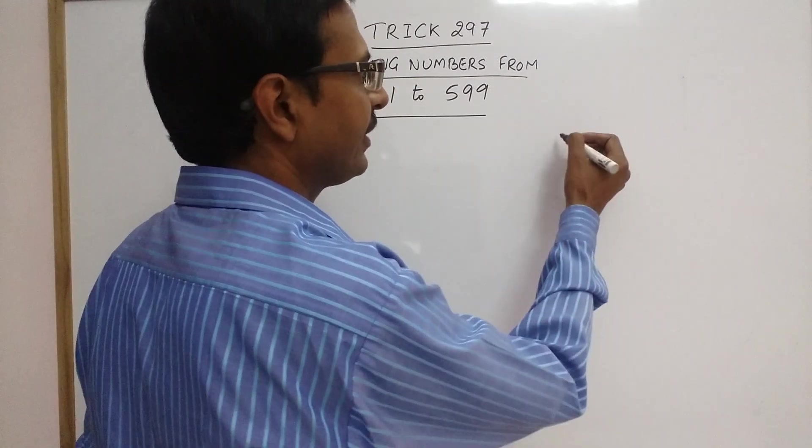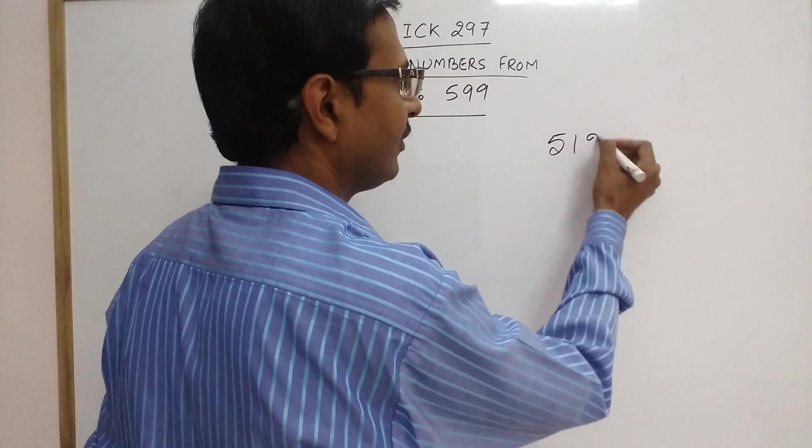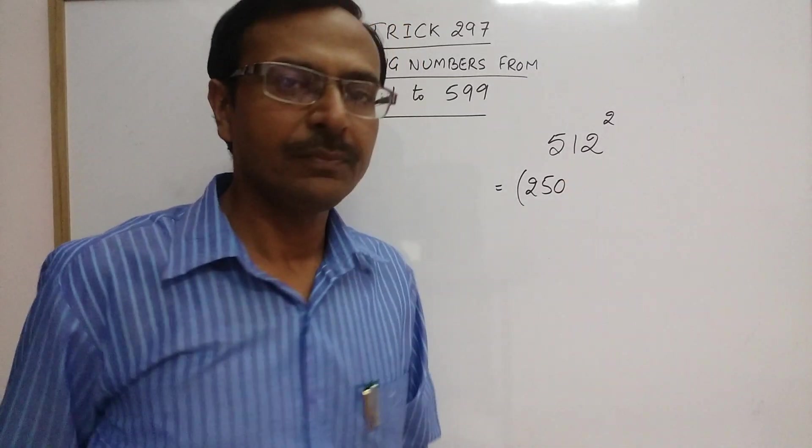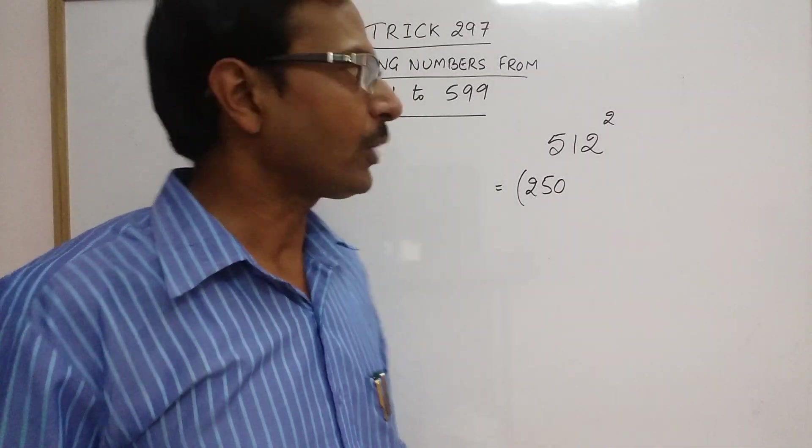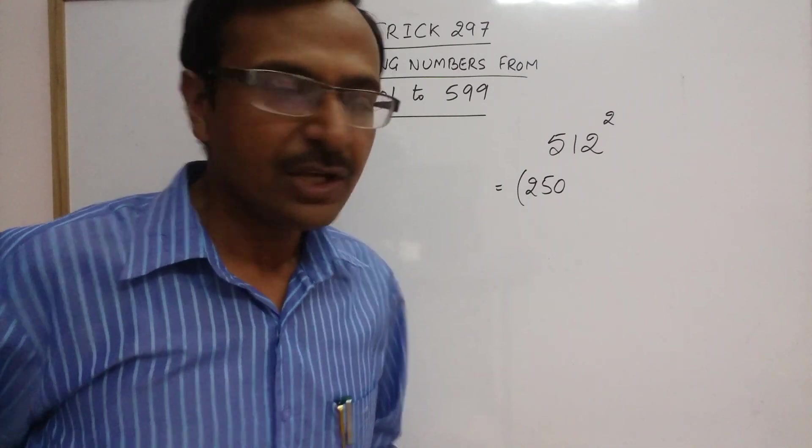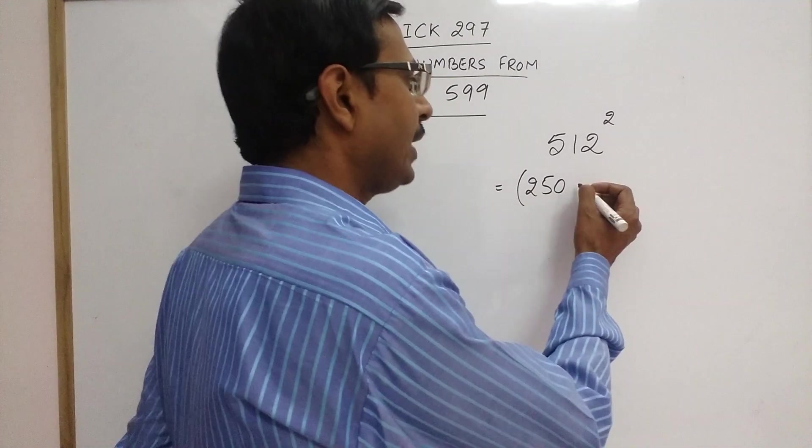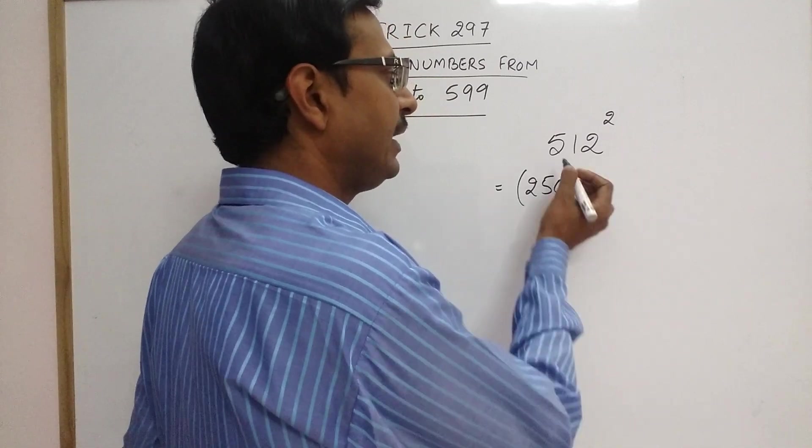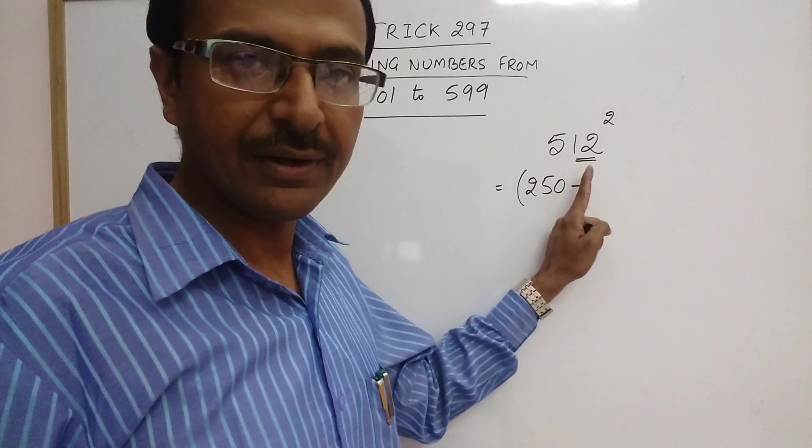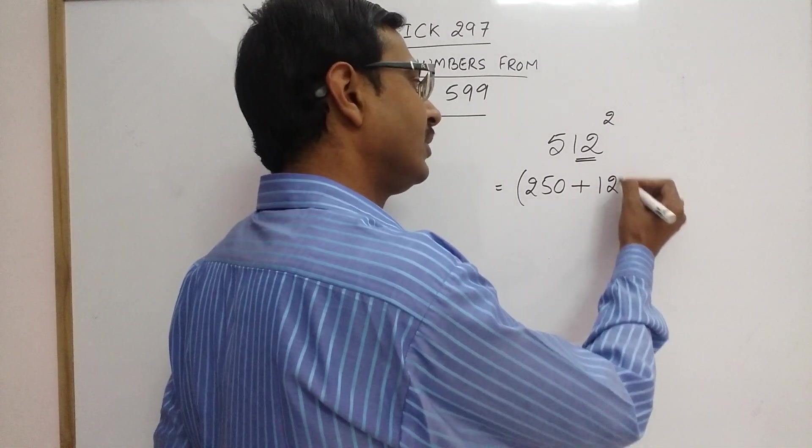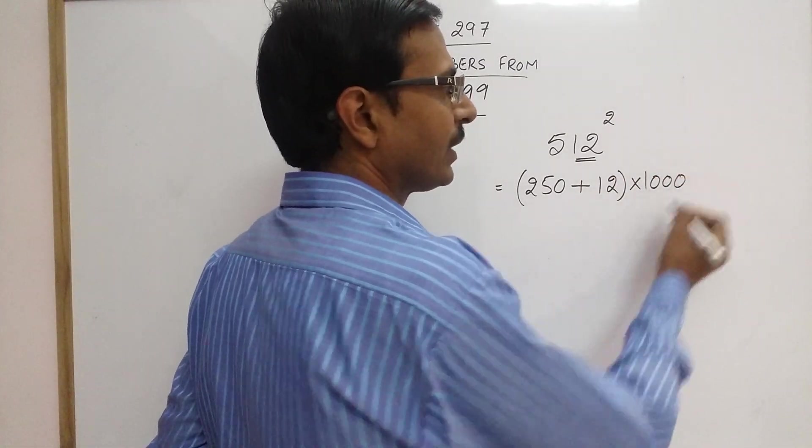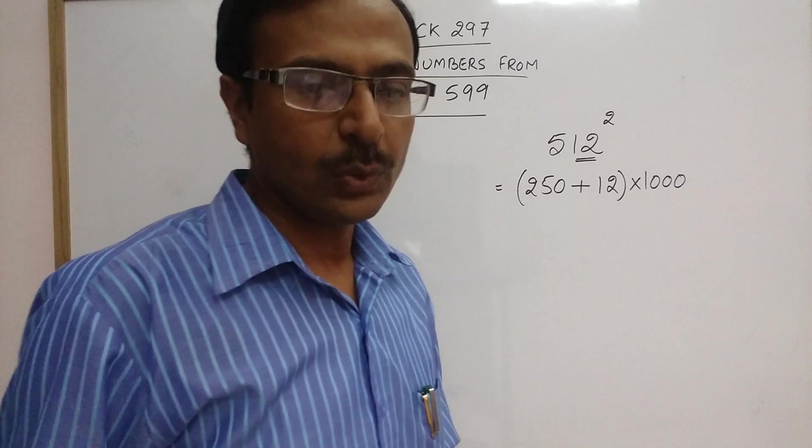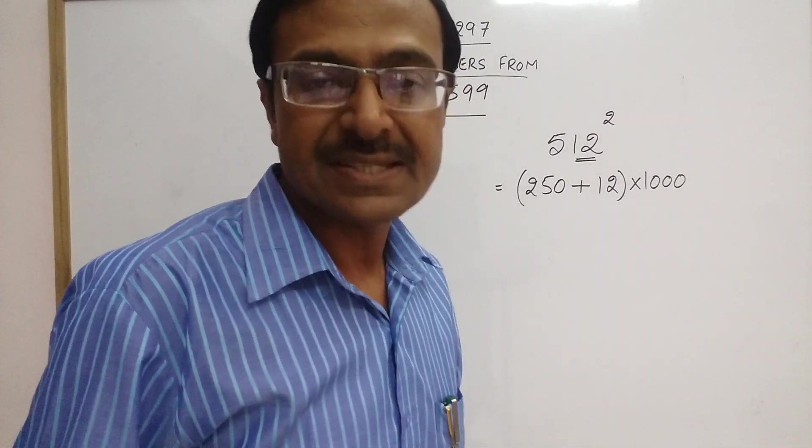Say I have 512 square. What you do in such cases is write the factor 250. This factor 250 is fixed for every number whose square is to be found from 501 to 599. You need to write 250. And now this 250 you have to add, leave this 5. The number is 12 here apart from the 5. So add 12 multiplied by 1000. This is the complete step so that you can understand the method. Later on we can skip some steps.